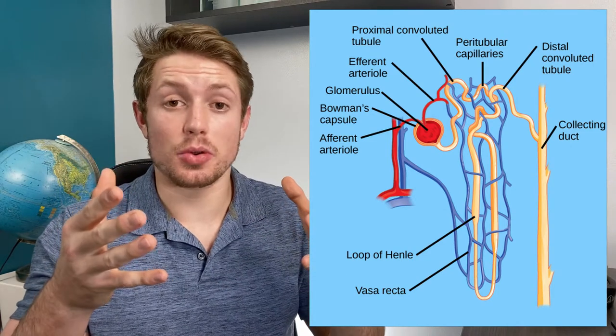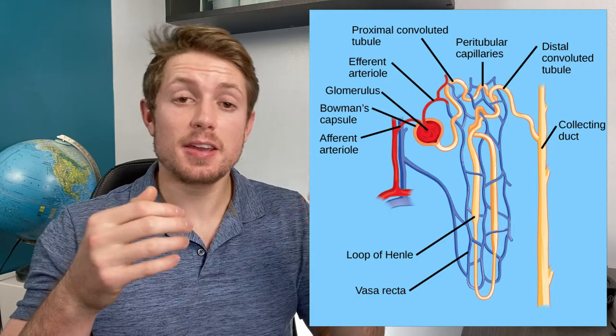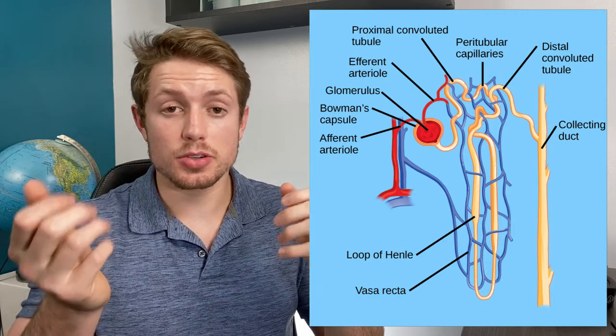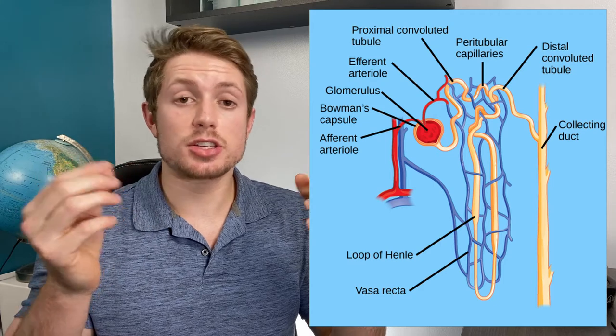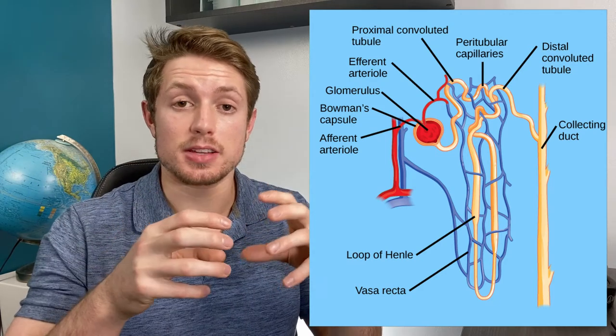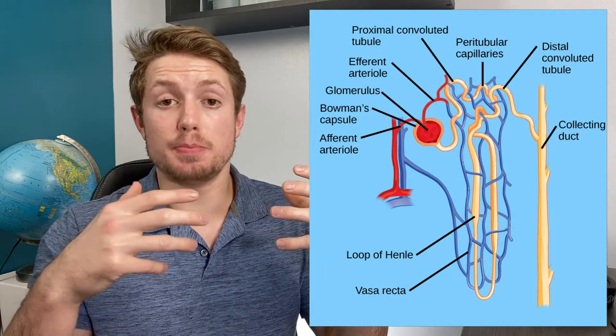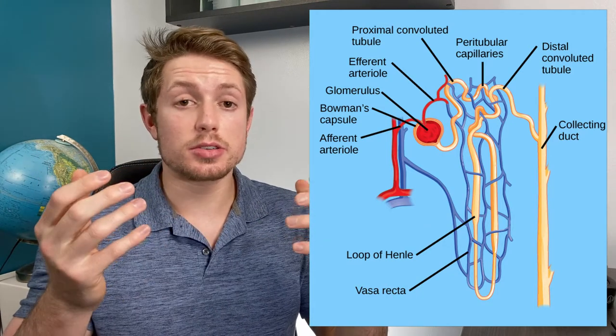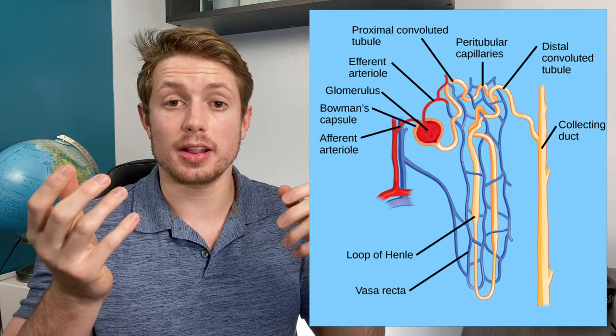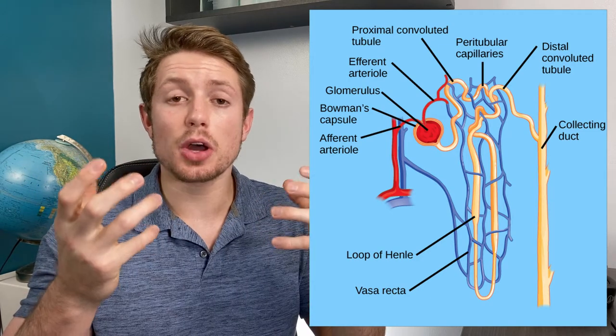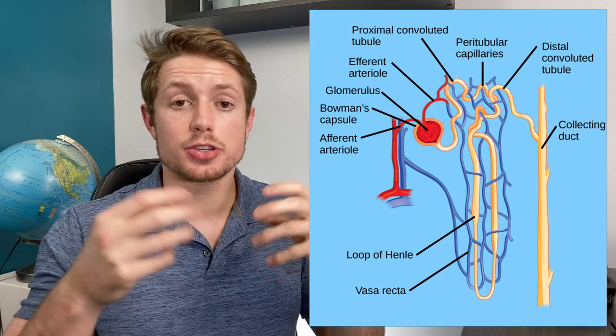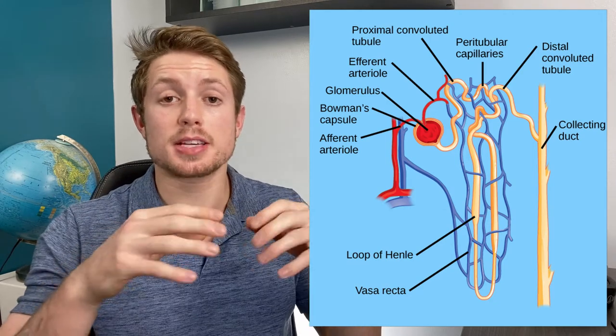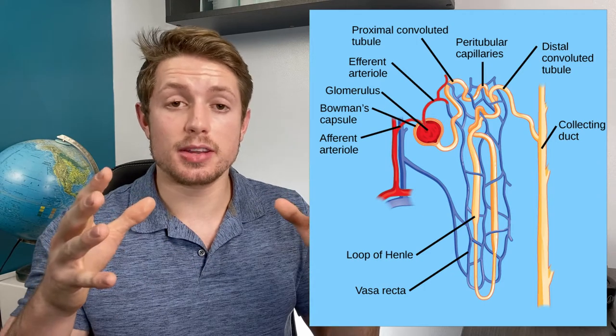So just to start with some of the amazing control going on here, this efferent and afferent capillary can be selectively constricted or dilated to change the pressure inside this capillary bed, inside this Bowman's capsule. And it can do this both with different signals from hormones or nerves, and it also can just do it by itself in autoregulation where it's modulating its own pressure. And so it can adjust the amount of pressure in this capillary where there's more pressure, it's forcing more of the plasma and all the stuff in the blood out into this Bowman's capsule.